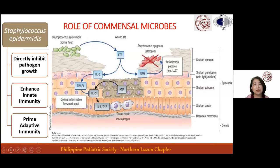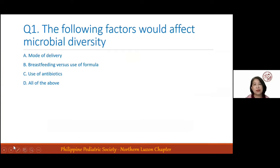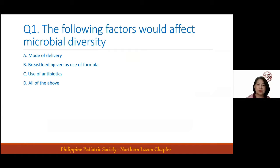Here is the first poll question: What are the following factors that would affect microbial diversity? Is it letter A, B, C, or D? Most of you got it right. The correct answer is all of the above.